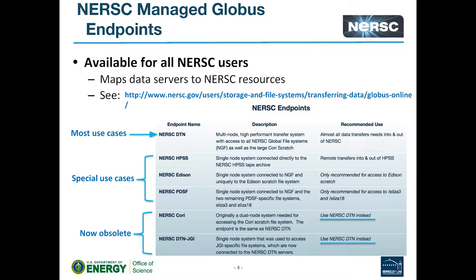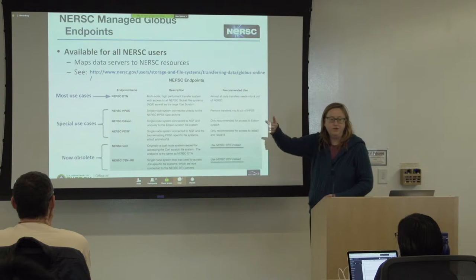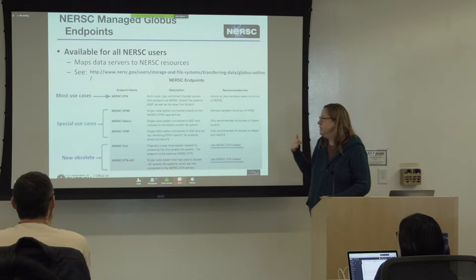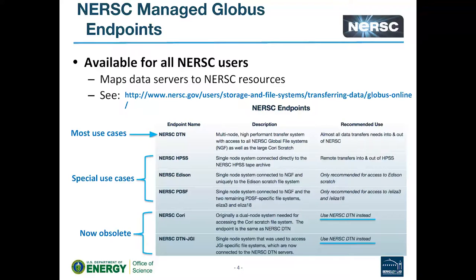These are the managed Globus endpoints. For most use cases, you'll probably find that the NERSC DTN endpoint will serve your needs. We have three other endpoints for special use cases: the NERSC HPSS endpoint, for doing transfers directly into and out of HPSS via Globus; the Edison endpoint, which is the only endpoint with access to Edison scratch; and a dedicated endpoint for PDSF, for transfers of storage local only to PDSF.